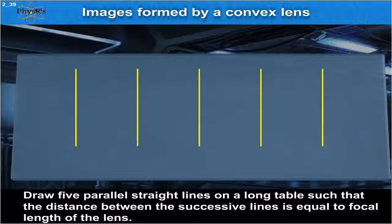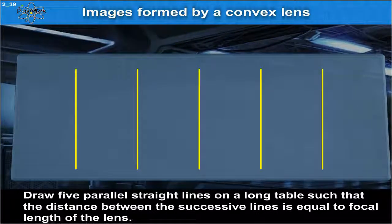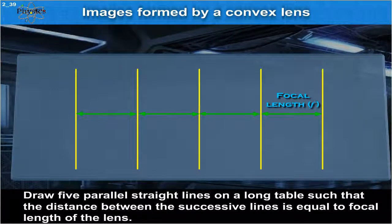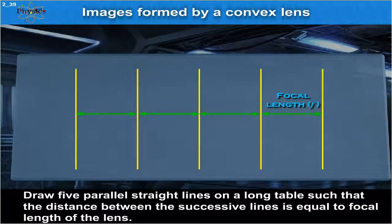Draw five parallel straight lines on a long table such that the distance between the successive lines is equal to focal length of the lens.